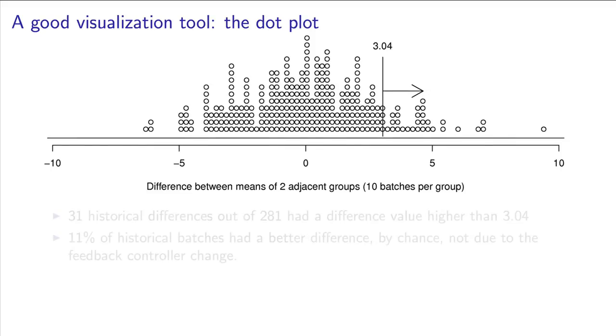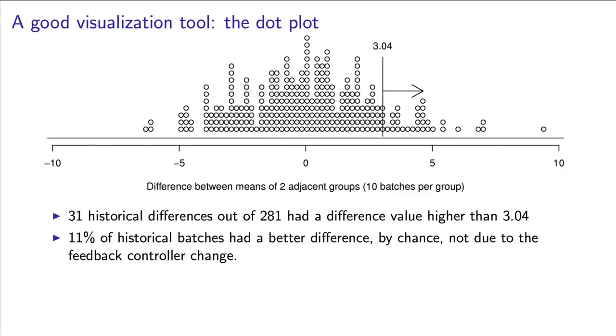Most of the dots should be around 0, and we can see that here. Draw a vertical line now, and we observe 31 of the 281 dots lie to the left of that 3.04. That's about 11% of the area.